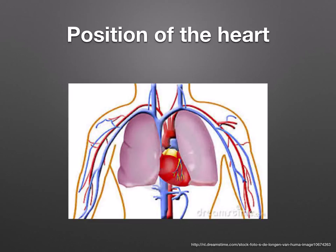The heart is a muscular organ, which in humans is between 250 and 350 grams in mass. It pumps about 13,000 cubic decimeters of blood each day. It's found in your thoracic cavity behind the sternum — that breast bone — and between your two lungs.